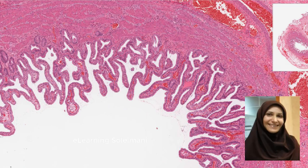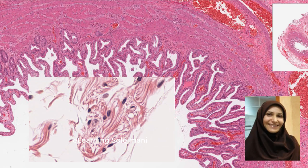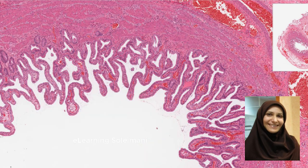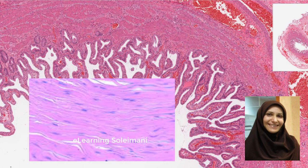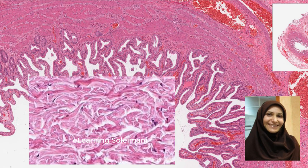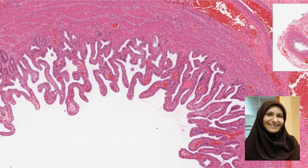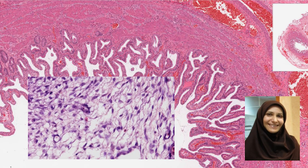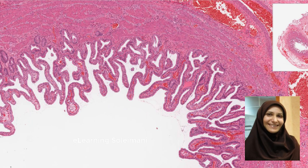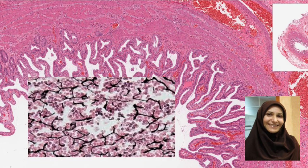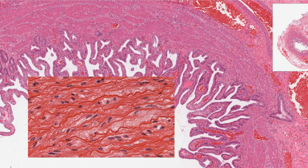Connective tissue has various types including loose connective tissue, which exists in the lamina propria of various organs. Dense connective tissue can be either regular or irregular. Embryonic connective tissue includes mucus and mesenchymal tissue. Special connective tissues include adipose, reticular, and elastic tissue.